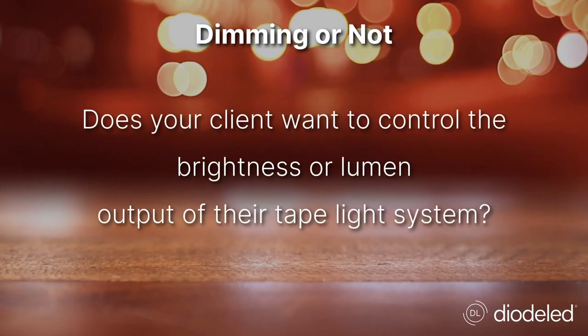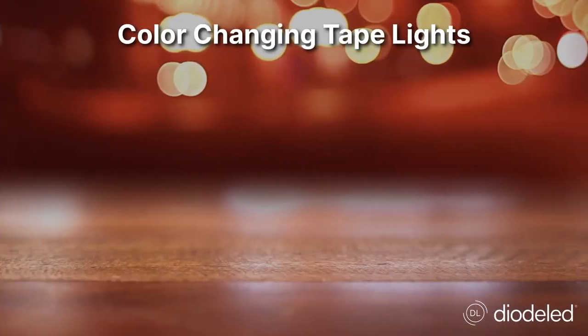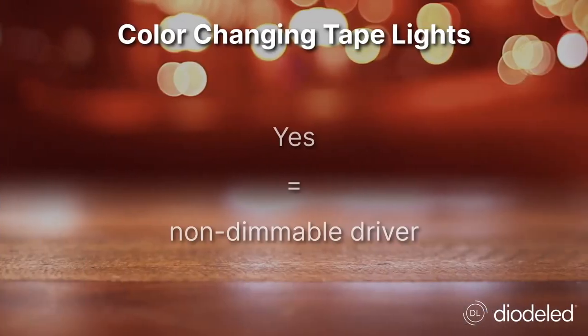So again, what are the questions you need to answer? Does your client want to control the brightness or lumen output of their tape light system? The answer will determine if you use a dimming protocol or just an on-off switch. Also, does your client want a color changing tape light system? If yes, then you need a non-dimmable driver — just another reason to plan and prepare accordingly ahead of time.